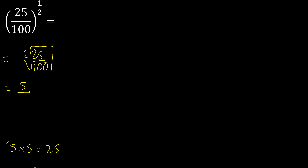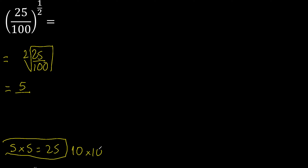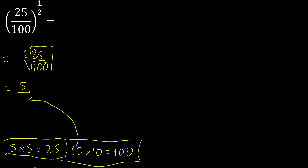5. 2 equal numbers that multiply is 100 — 10 multiplied by 10 is 100. 10.